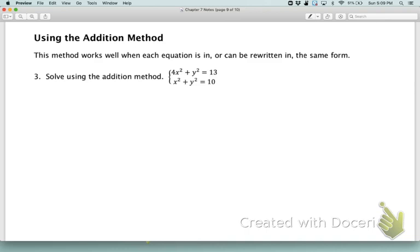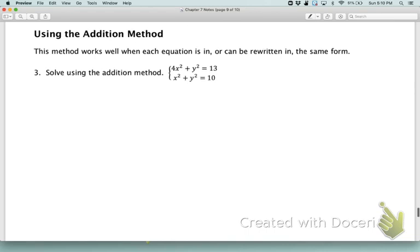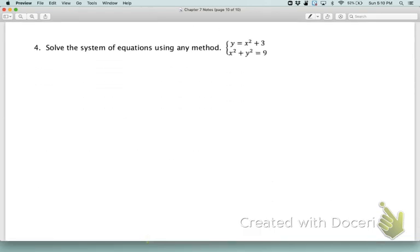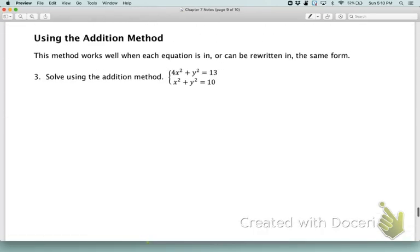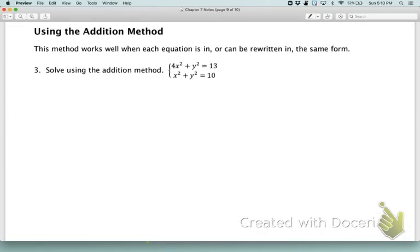In example three, you can see that they are the same form. They're both set up with an x squared and a y squared and a constant. The bottom one is a circle. The top one is an ellipse. But on example four, even if we rewrite the top one, we're not going to have a y squared and a y squared. We're still going to have a y and a y squared, but we would be able to eliminate the x squared.